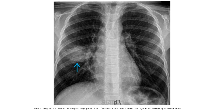Frontal radiograph in a seven-year-old with respiratory symptoms, showing a fairly well-defined, circumscribed round to oval right middle lobe opacity.